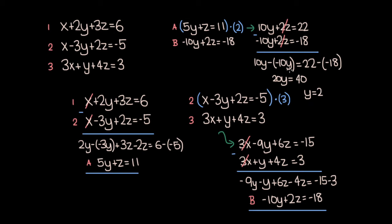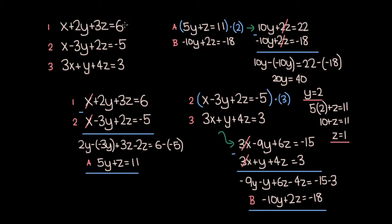Now that y equals 2, we can use equation a to find z. We know 5 times 2 plus z equals 11, so 10 plus z equals 11, and subtracting 10 from both sides gives z equals 1. Now we know y is 2 and z is 1, and we can plug these values back into any one of our original equations to find the value of x.